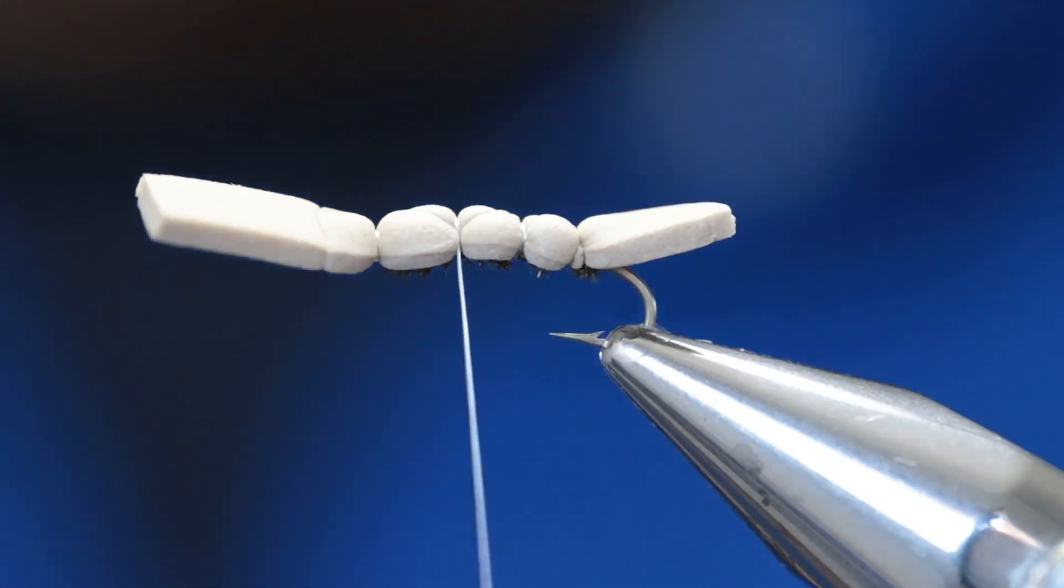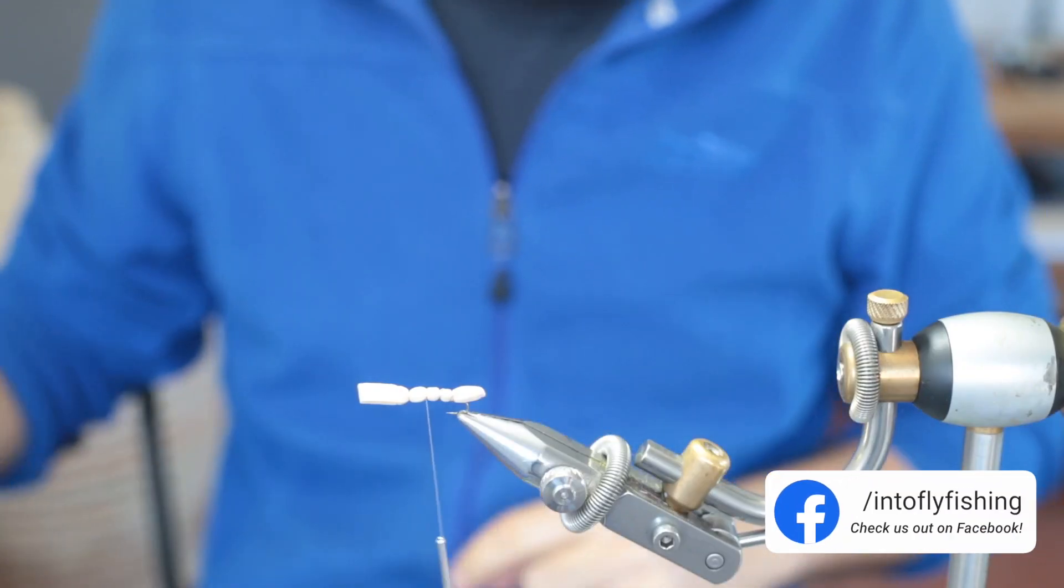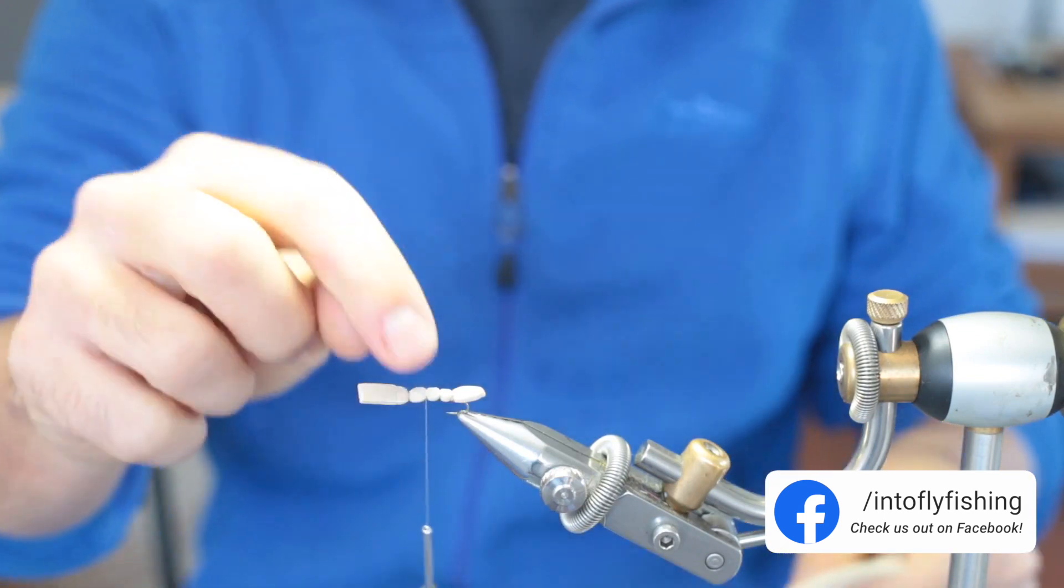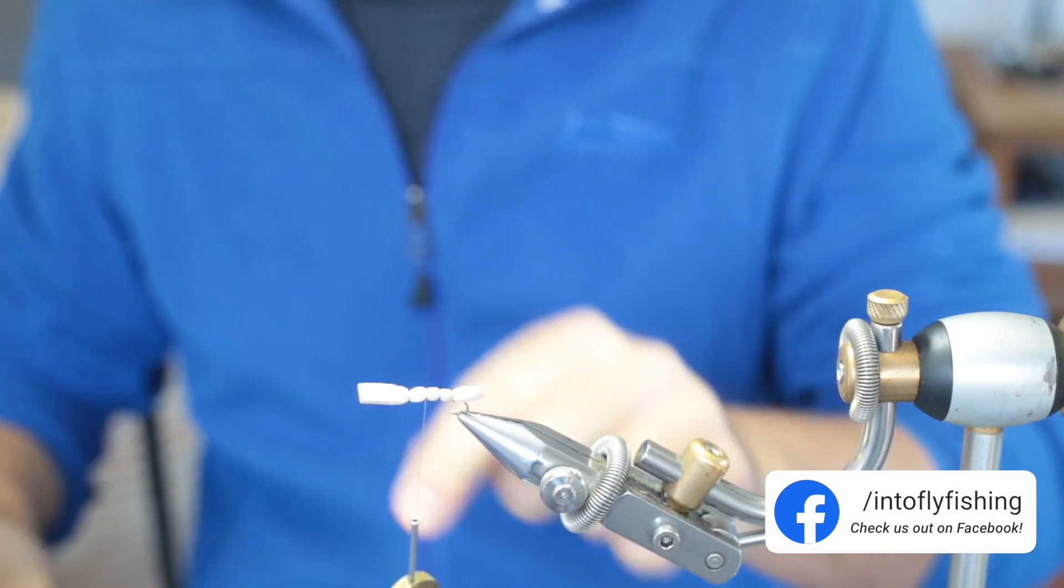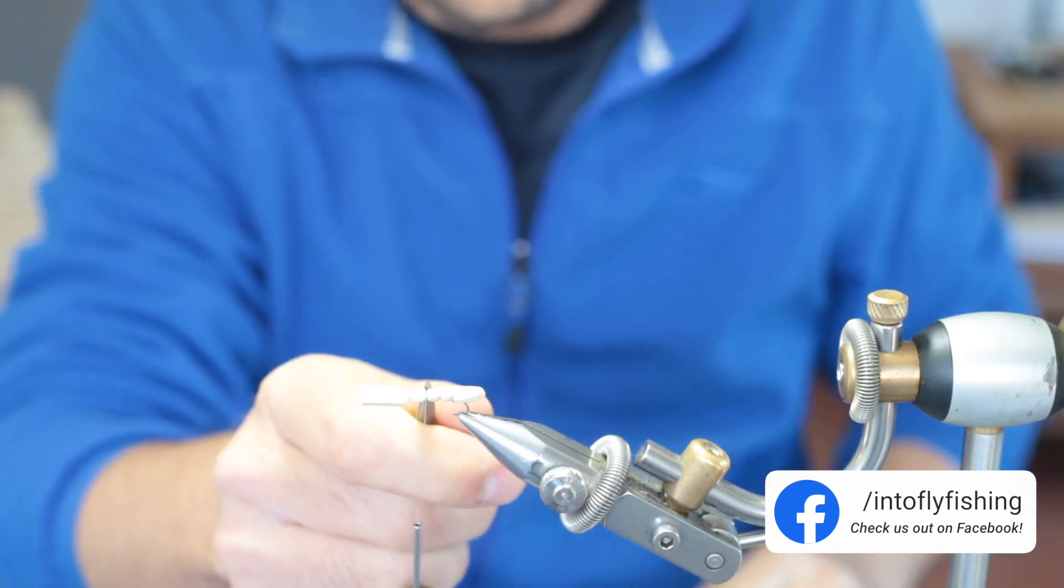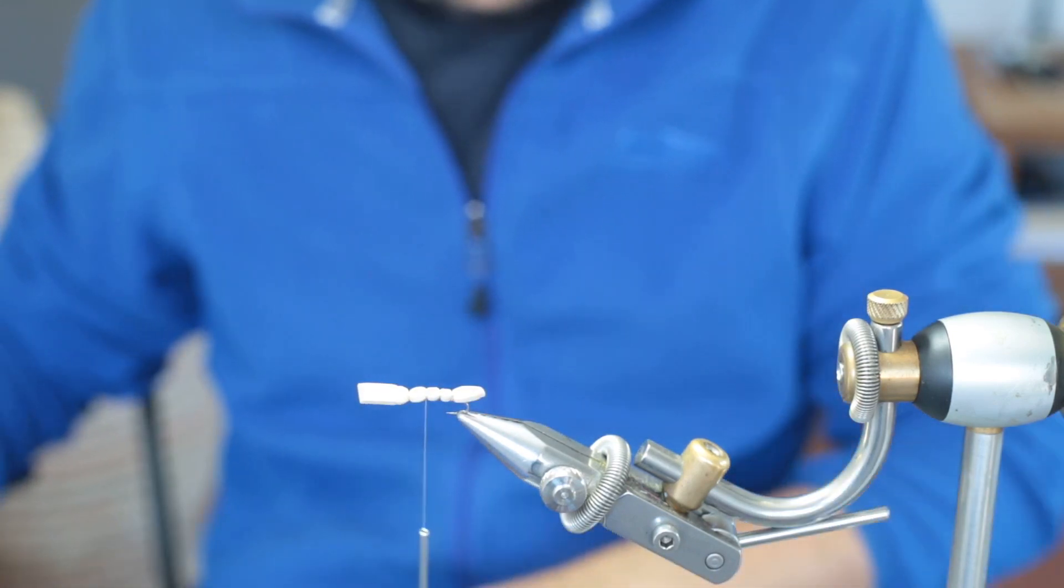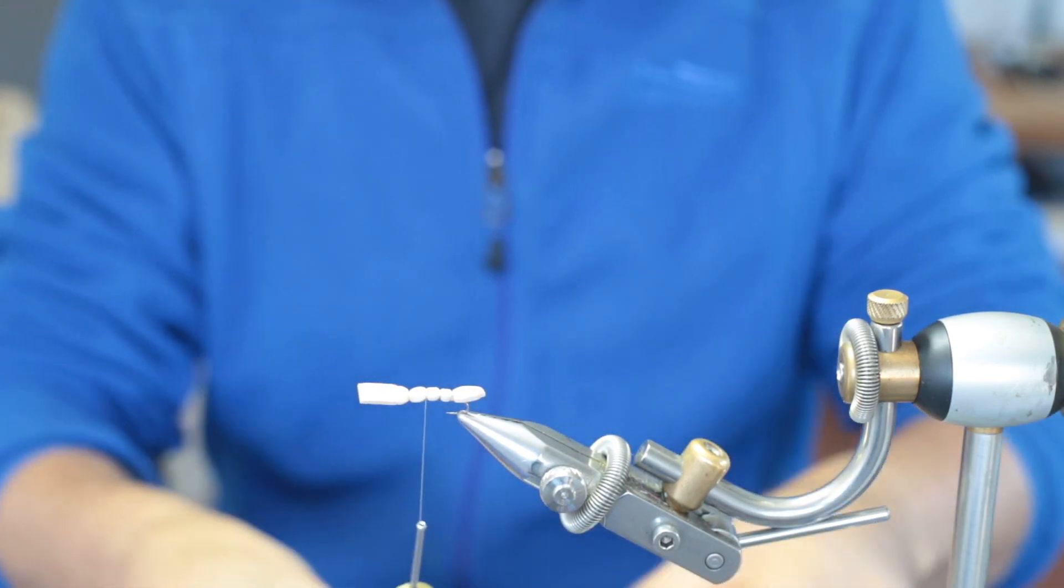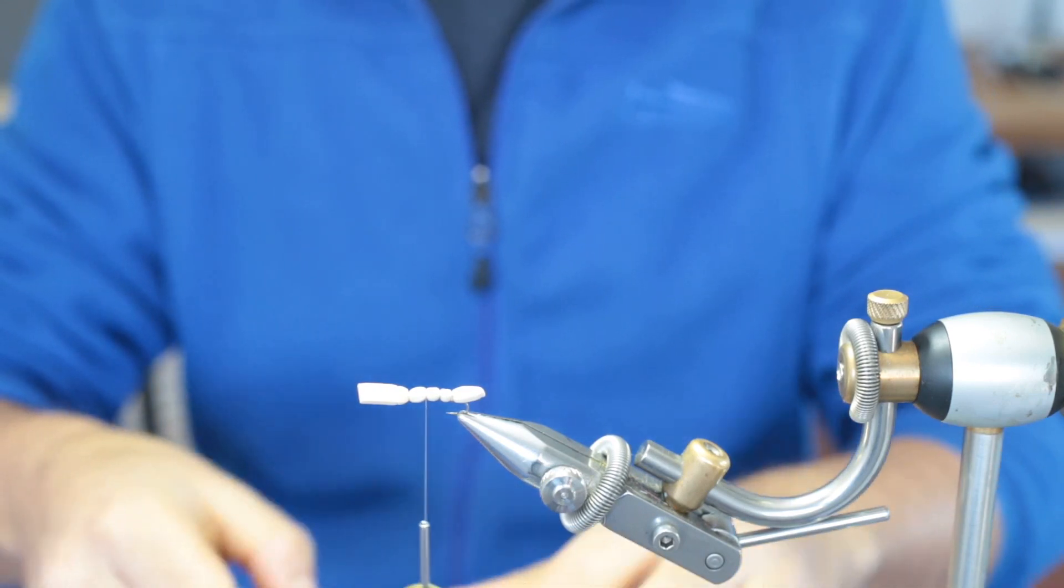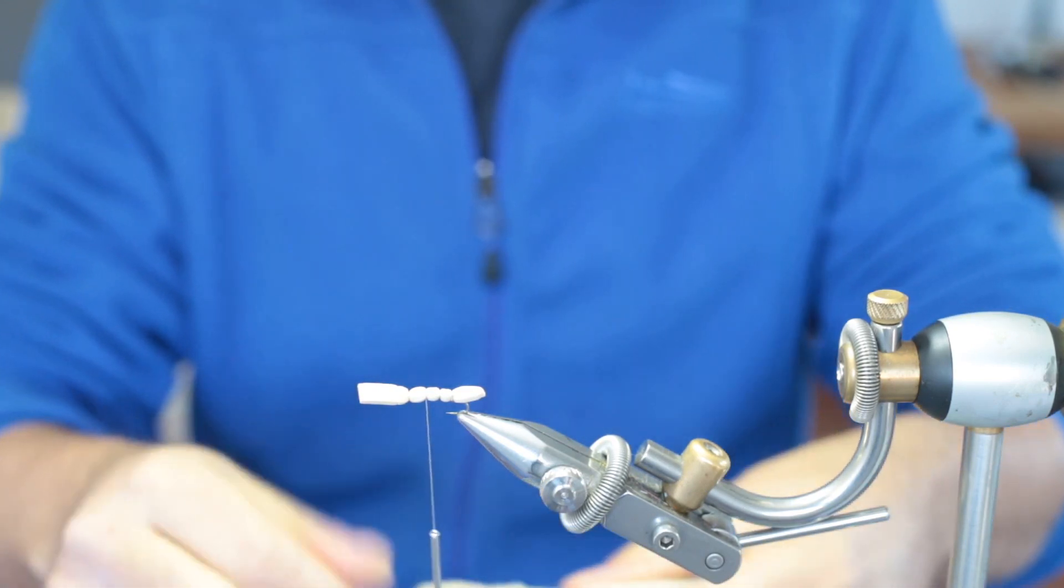So at this point we can continue to creating the wing. We'll leave the thread right on this segment. That's where the wing will be tied in. Or shall I rather say the wing, there's not an underwing on this fly.